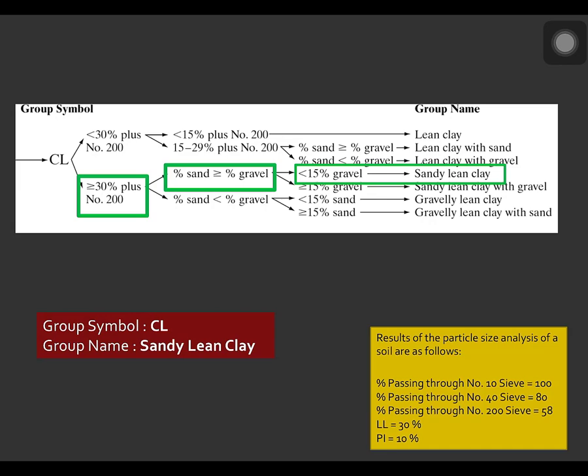So, group symbol is CL and the group name is sandy lean clay. So, that is how we identify or we classify the soil using the USCS.